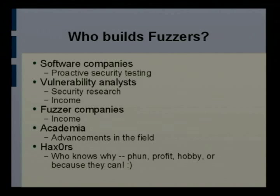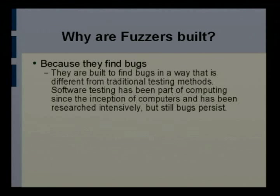Who does this fuzzing thing? Software companies ought to be doing this, and I think they are now — probably starting about a year ago they jumped on the bandwagon and said we're getting killed: the bad guys are fuzzing and finding bugs and we're not finding them. Vulnerability analysts are fuzzing. Fuzzing companies are creating fuzzers to sell. There's academic work — I'll talk about Codenomicon in Finland briefly — and there's hackers. Fuzzers are built because they work.